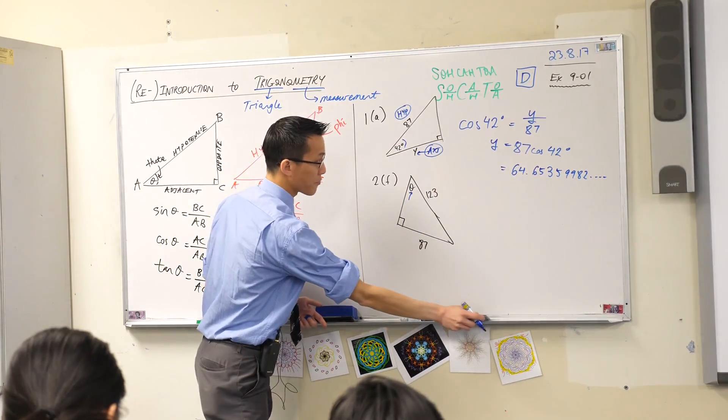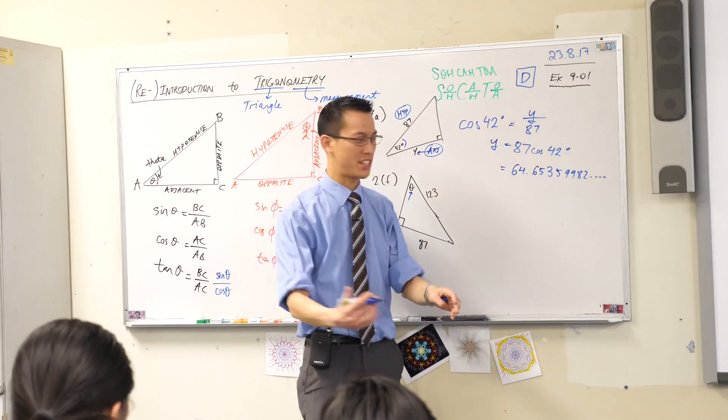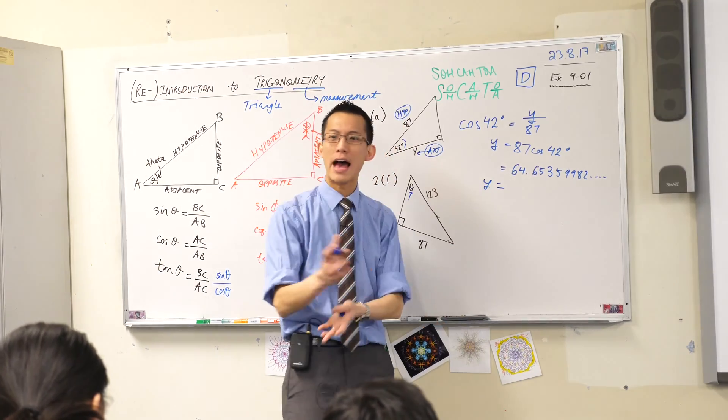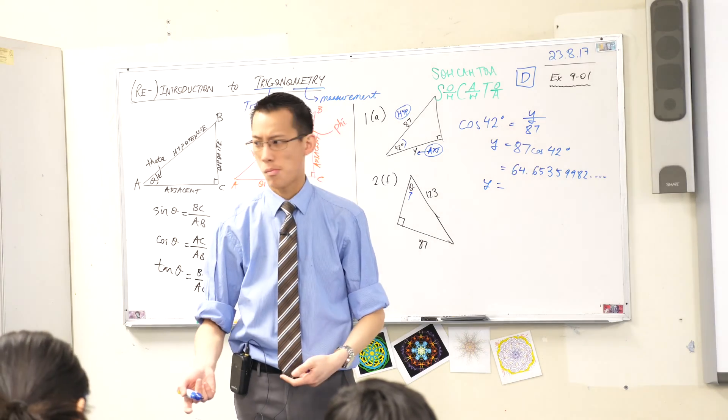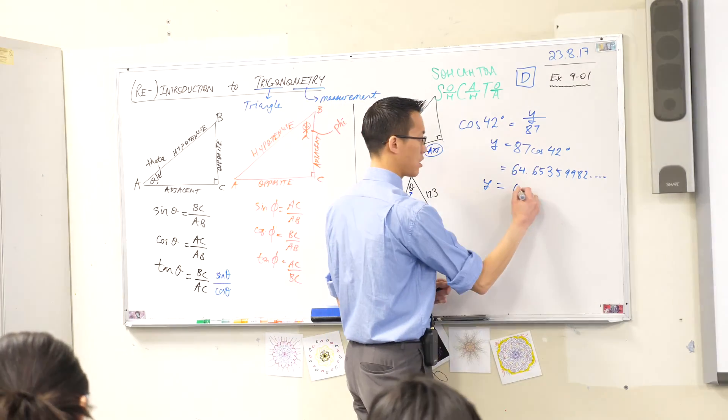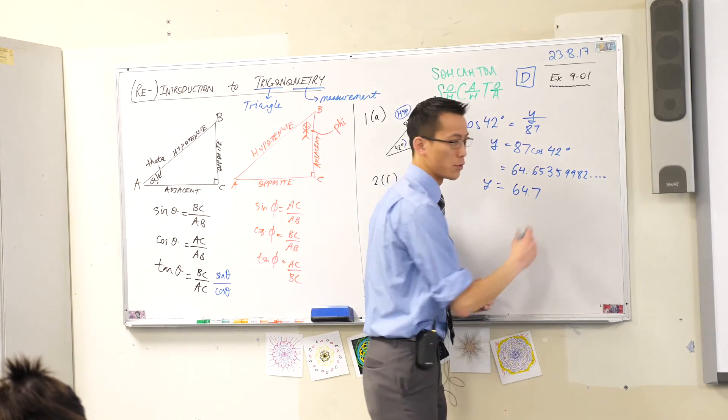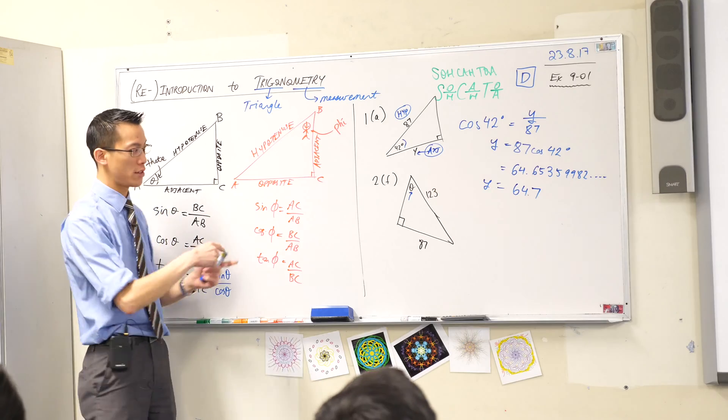Now, the question will usually ask you for a particular level of accuracy. So on your next line, your last line, you provide whatever accuracy was asked of you. What does the question say? One decimal place. Okay. 64.7. Wonderful. Now just put your pens down and look up for a moment before we move on to the next question.